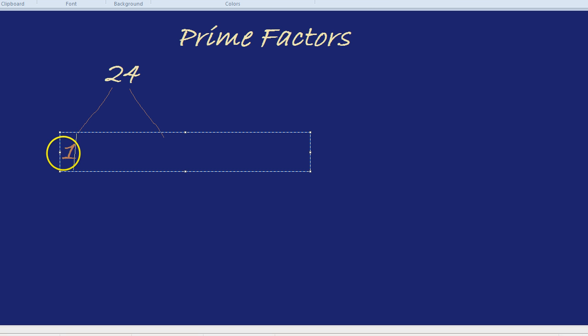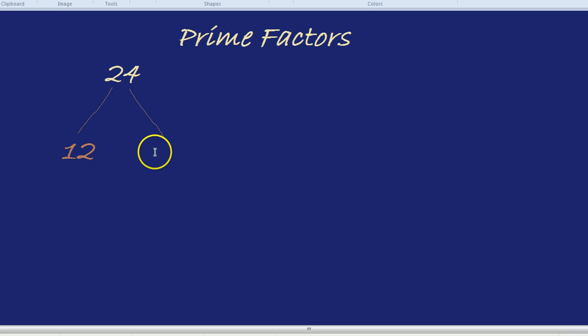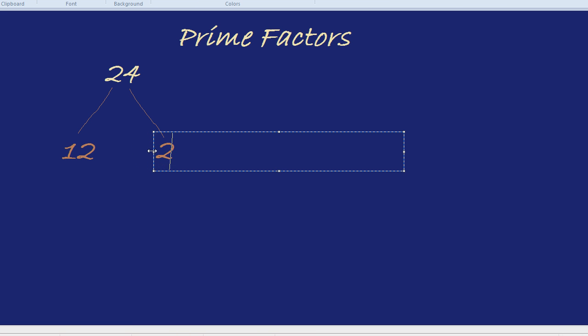24 is 12 times by 2. Now, which of those two numbers are prime? 12 is not prime because 6 times by 2 is 12 and 4 times by 3. So it can be broken down. 2 cannot be broken down.